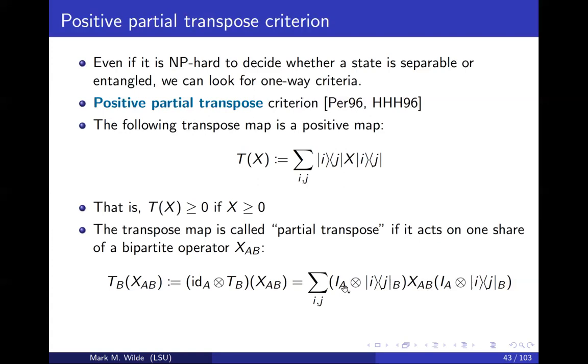If we do a partial transpose on Bob's system, it's just this map right here. So nothing's happening on Alice's system, it's just the identity tensored with these operators for Bob's system. A bipartite state that has a positive partial transpose we call it a PPT state for short. So this is a pretty important concept in entanglement theory.